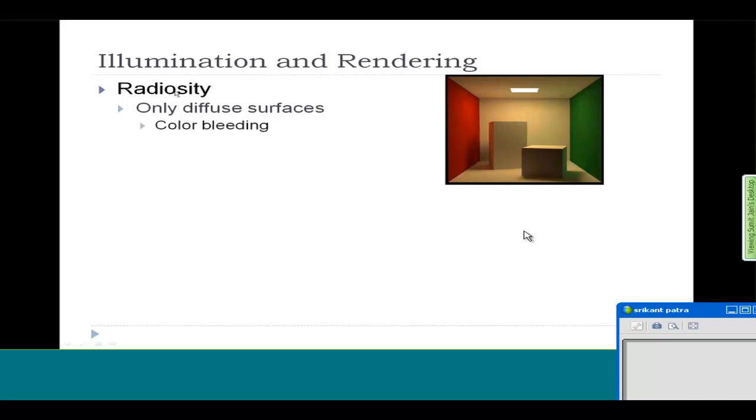Radiosity is an algorithm which can generate these kinds of effects. You can see that this image looks very real already. But the downside is there are no reflections or shininess. If I place a shiny object such as a mirror, radiosity won't be able to capture that.